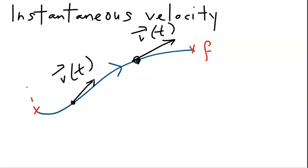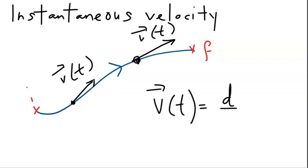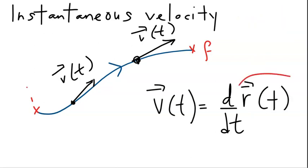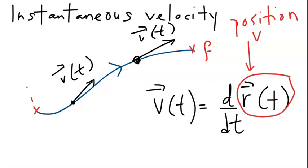Mathematically, instantaneous velocity is defined in terms of a time derivative — it is the time derivative of the position vector. This is the position vector of the object, and as the object moves, it changes, so it is a function of time.